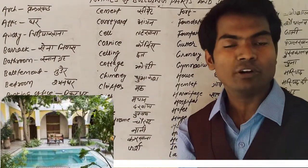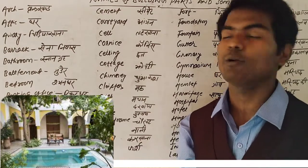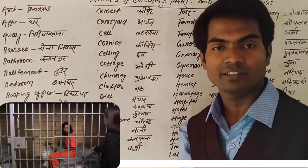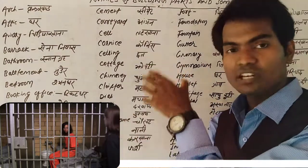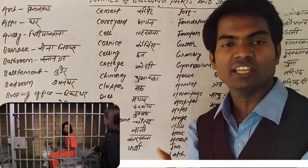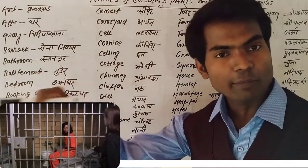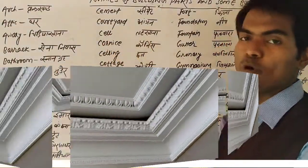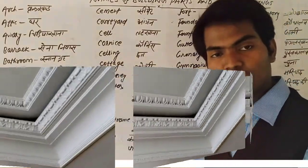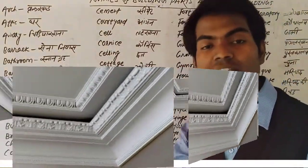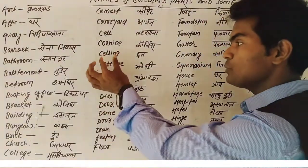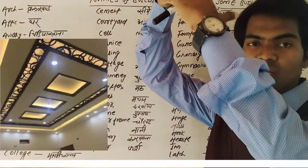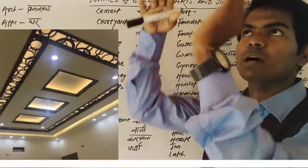Courtyard — courtyard is found in each house, 'har ghar mein aangan milta hai,' and courtyard is in the middle part of the house. Cell — cell ka matlab ghar bhi bol sakte hain, 'seel' bhi bol sakte hain, jail ka ek internal part bhi bol sakte hain, that is called cell. Cornice is an English word also used in Hindi. Ceiling — the lower internal part of a roof is called ceiling.